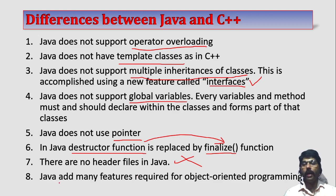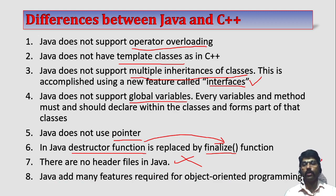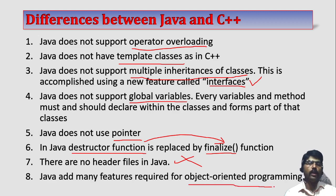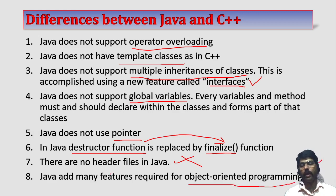Java adds many features required for object-oriented programming languages. So apart from C++ features, it has some more advanced object-oriented programming features in Java.